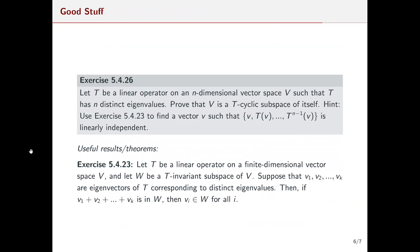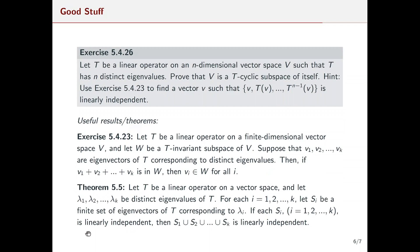The supporting results we'll use are exercise 5.4.23 and Theorem 5.5. Exercise 5.4.23 says: let T be a linear operator on a finite dimensional vector space V, and let W be a T-invariant subspace of V. Suppose v₁ through vₖ are eigenvectors of T corresponding to distinct eigenvalues. Then if their sum is in W, each of them is in W. Theorem 5.5 states: let λ₁ through λₖ be distinct eigenvalues of T, and for each i let Sᵢ be a finite linearly independent set of eigenvectors corresponding to λᵢ. Then the union of all Sᵢ is linearly independent.